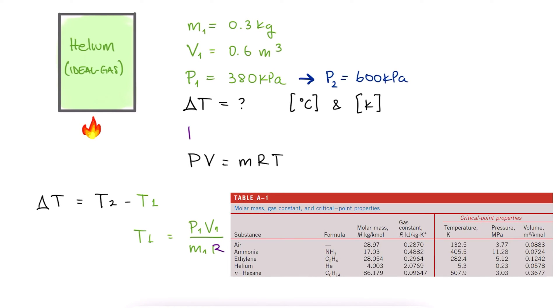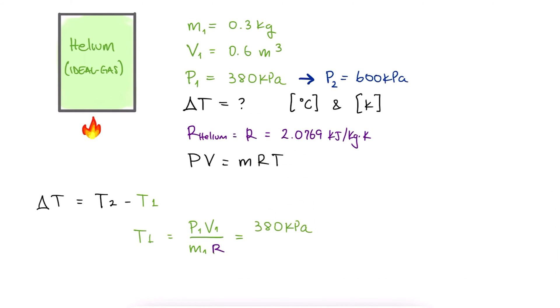The gas constant for helium can be looked up to be 2.0769. We substitute the given values and find that the initial temperature is 366 Kelvin.